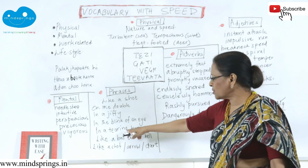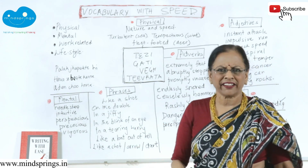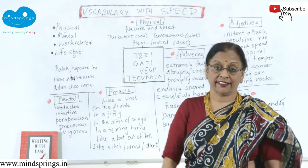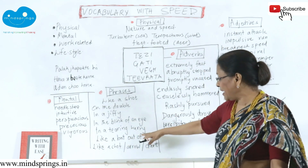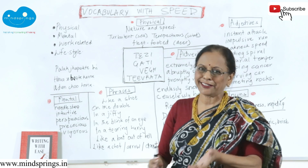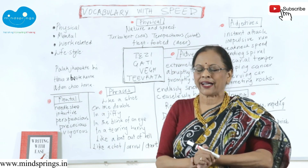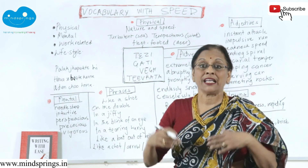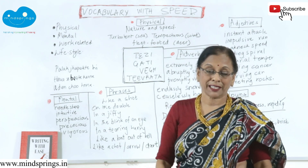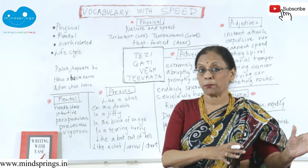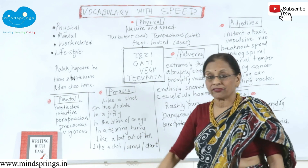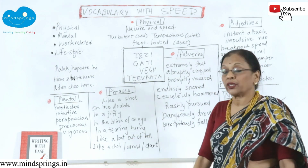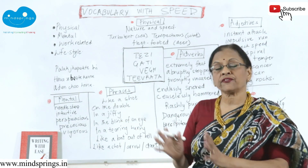'In a tearing hurry' — look at the word tearing: like how you tear something, the hurry is tearing. Then 'like a bat out of hell' — that's a very good expression in English; it means the way a bat would run out of some place that is hot, with this person running out at great speed. You can also say 'like an arrow' or 'like a dart' — all these phrases are used for speed.